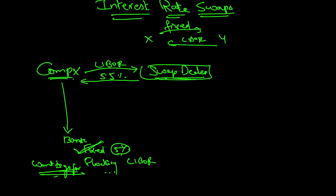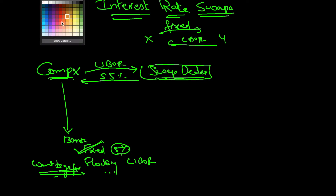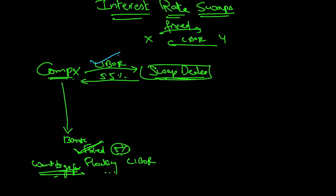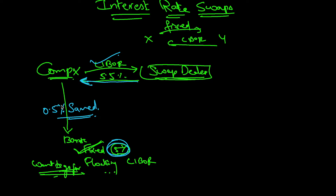In return, the swap dealer pays Company X something like 5.5% — more than the 5% fixed rate they owe the bank. So net-net: they pay LIBOR to the dealer, receive 5.5%, and pay 5% to the bank. They are saving 0.5% through this interest rate swap. This is why Company X enters into the swap.